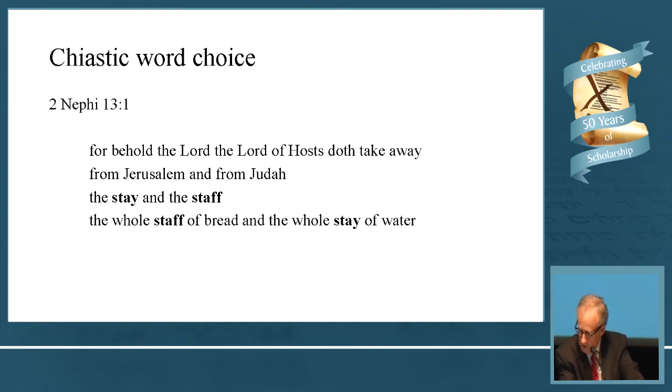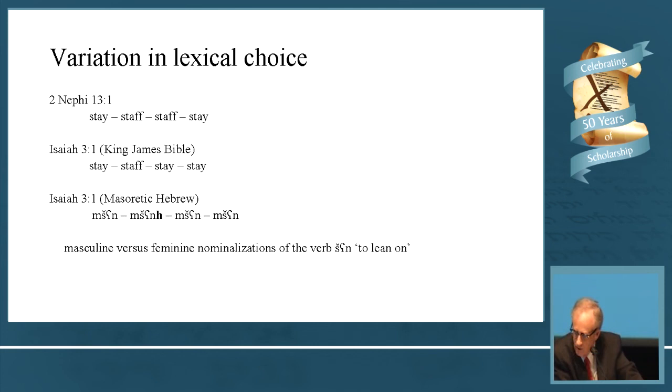Here's one with chiastic word choice. The Book of Mormon reads the stay and the staff, the whole staff of bread and the whole stay of water. But that isn't how your King James reads. It reads the stay, staff, stay, stay. It has stay three times and staff once, probably because there's a feminine form for the second one and the other three are masculine. The translators chose to make a lexical distinction. But it is interesting, the Book of Mormon has it chiastically pure.